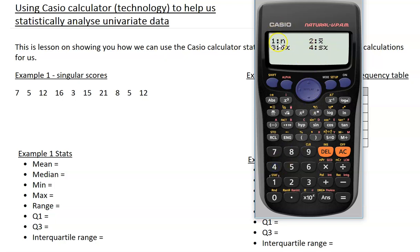If we select option 4, we'll see here 1 will tell us the number of scores, 2 will tell us the mean, 3 will tell us the population standard deviation which is not relevant for this video, and 4 will tell us the sample standard deviation, also not relevant for this video.